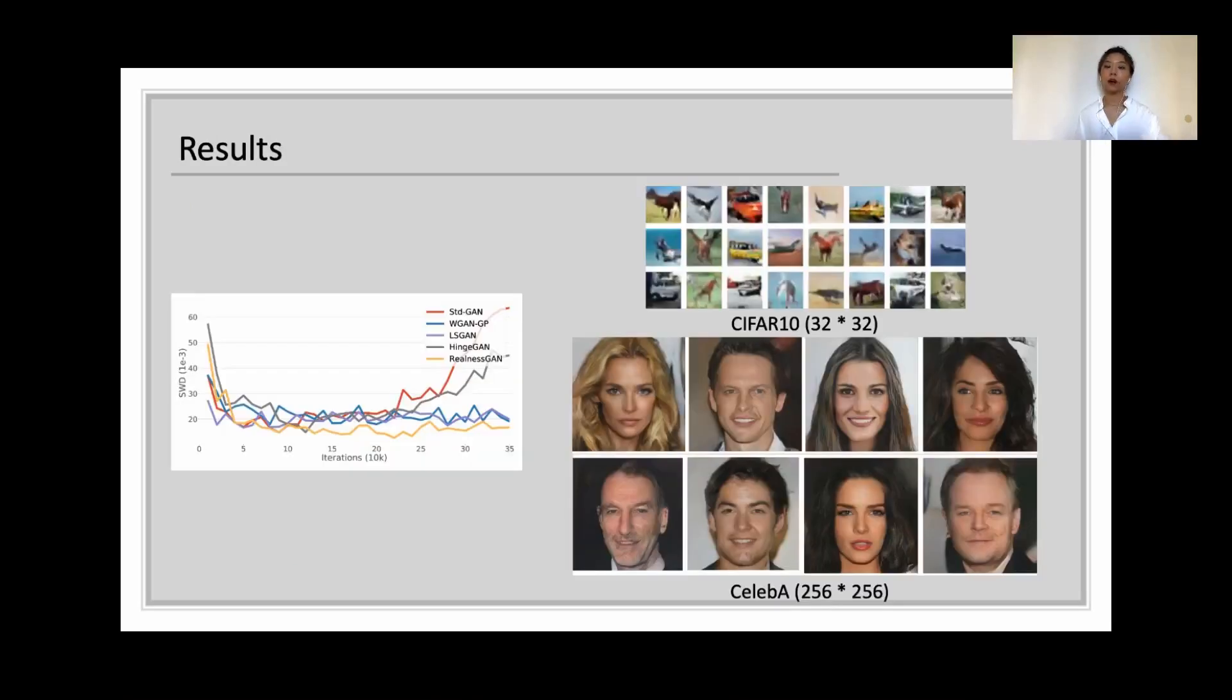In experiments, RealnessGAN was implemented using DCGAN's architecture. On the left is a typical training curve we obtained. Overall, RealnessGAN outperforms baselines in metrics and its learning process appears to be much steadier. And on the right, we display some samples generated by the model trained on CIFAR-10 and CelebA respectively.